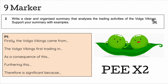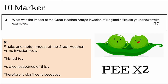The aim with 9 and 10 markers is to get as much historical knowledge in as you can. The 10-marker, question number 3, will always start with something like 'what was the impact of,' 'what was the cause of,' or 'what was the consequence of.' This question is about the Great Heathen Army. Again, exactly the same structure: point, evidence, explain — two paragraphs.